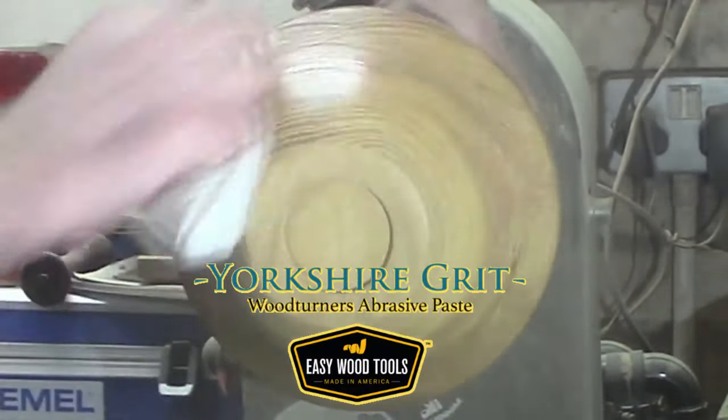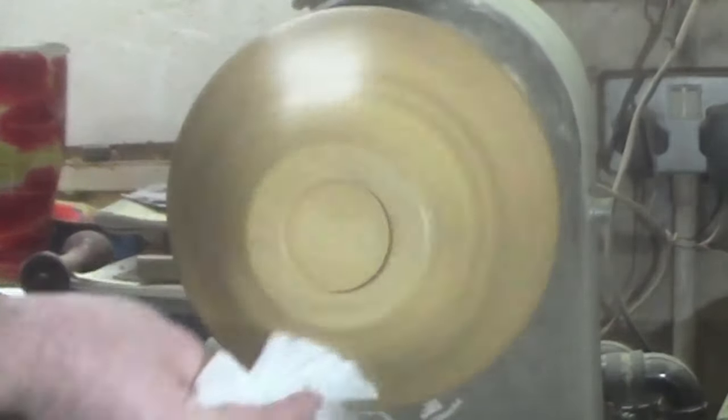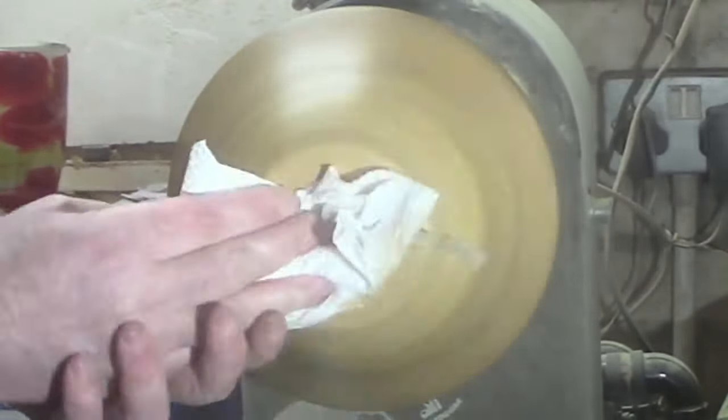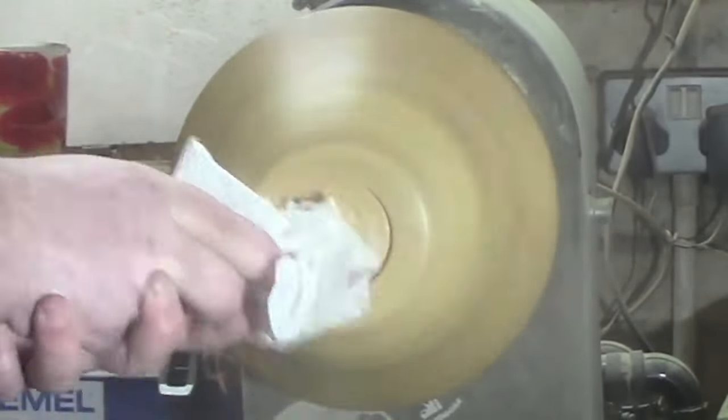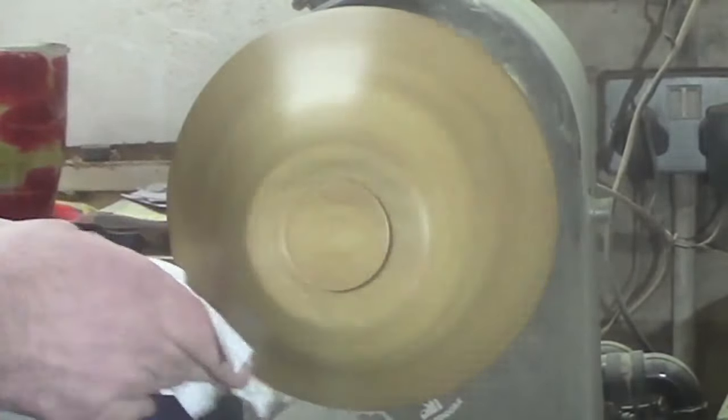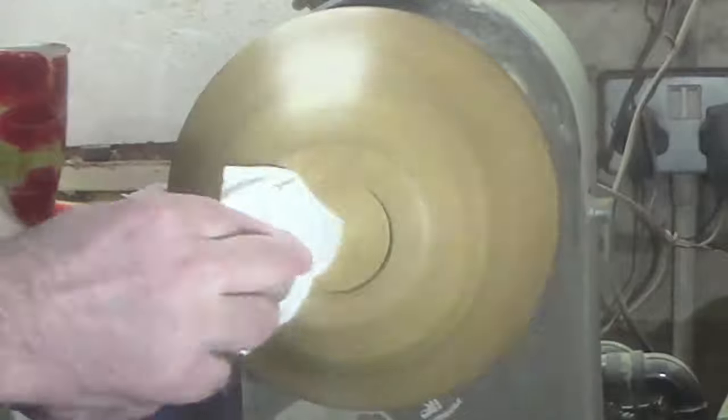And some Yorkshire Grit. You can get some of this from northsidecustomcrafts.com if you are in the USA, or Axminster Tools if you are in the UK. There are links down in the description. Just rub it all over until you get a clean paper towel and you'll have the equivalent of around about a thousand grit.